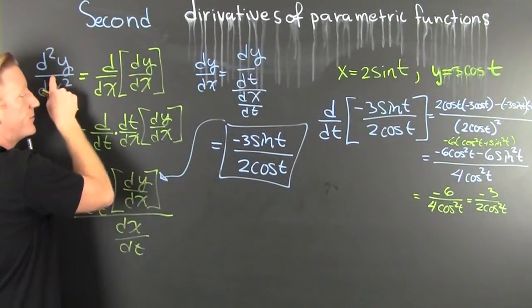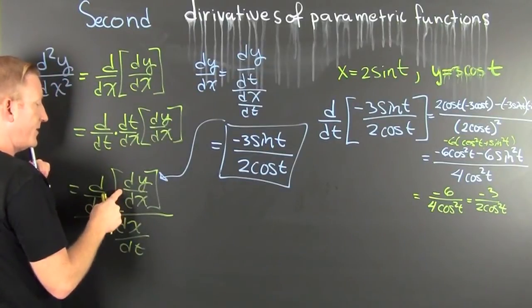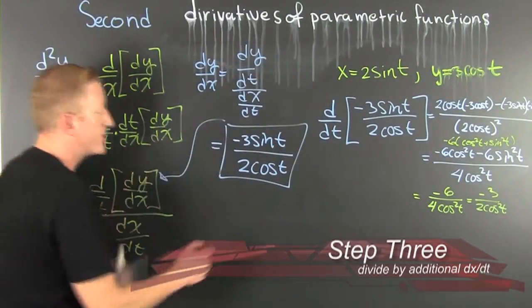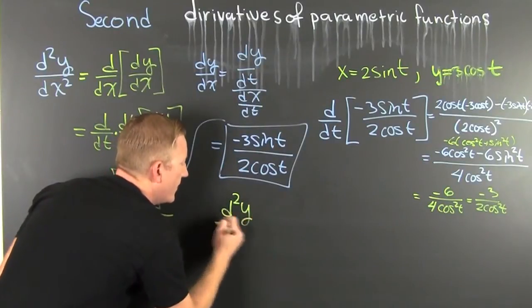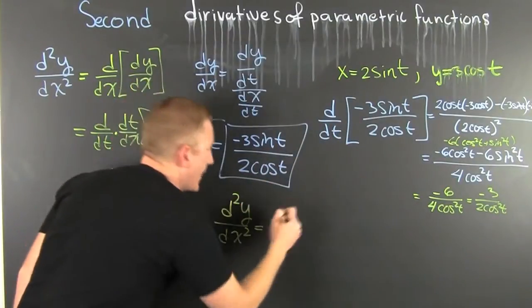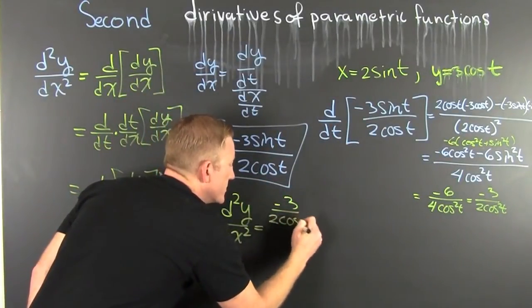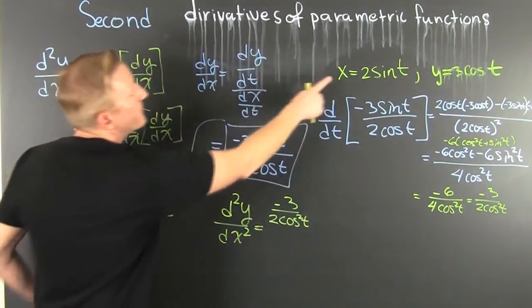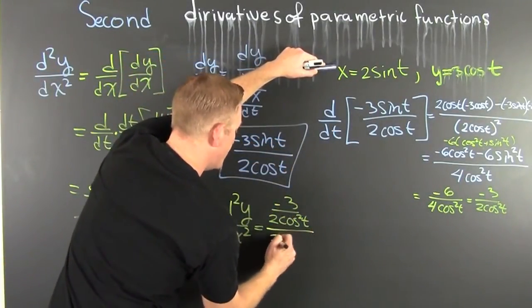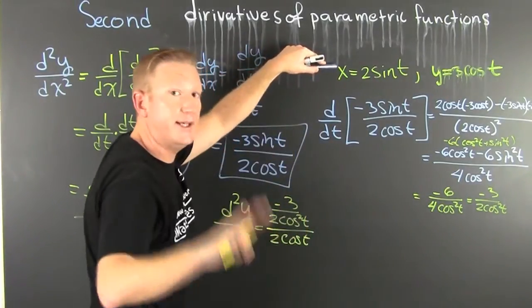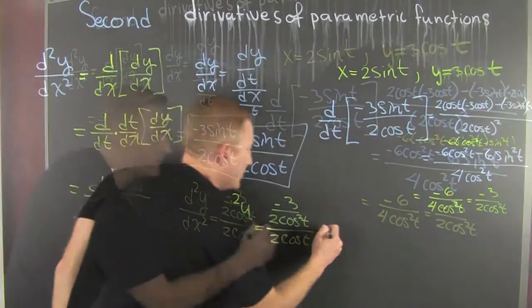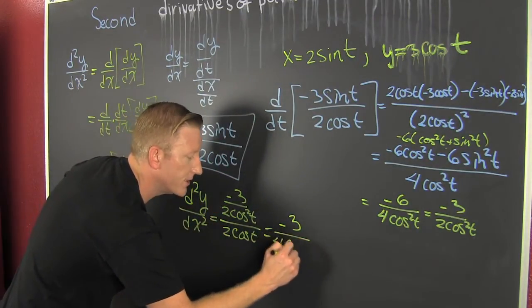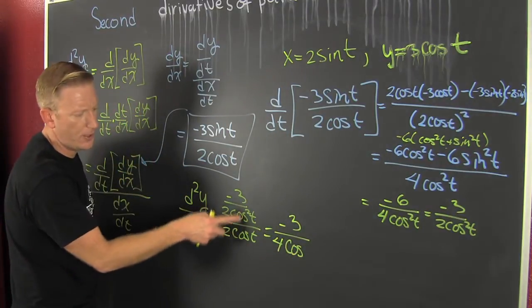We're not done yet, because we're taking the second derivative — that's the derivative of the first derivative divided by the derivative of x with respect to t. So the second derivative of y with respect to x twice is minus 3 over 2 cosine squared t, divided by the derivative of x with respect to t, which is 2 cosine t. That gives us minus 3 over 4 cosine cubed t.